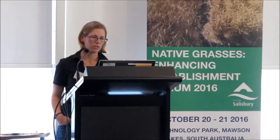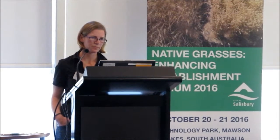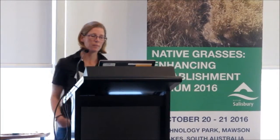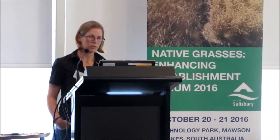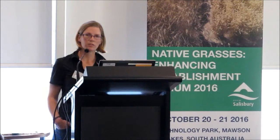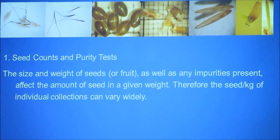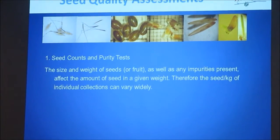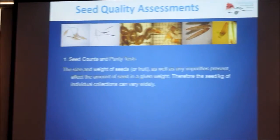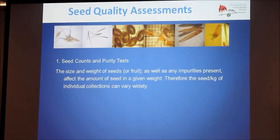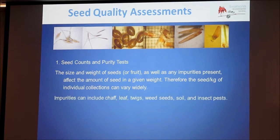So just a question: what is the difference between these two seed lots of the Enteropogon and these two seed lots of the wallaby grass? The first thing you need to do is a seed count and purity test. Obviously, the seed size and weight of the seeds — or fruit, depending on the species you're testing — affects your seeds per kilo, but also any impurities. If you've got twigs, leaf matter, weeds, seeds or sometimes insects in there, they all affect the seeds per kilo rate and should be incorporated into your equations.